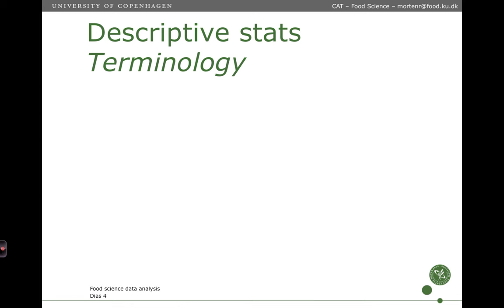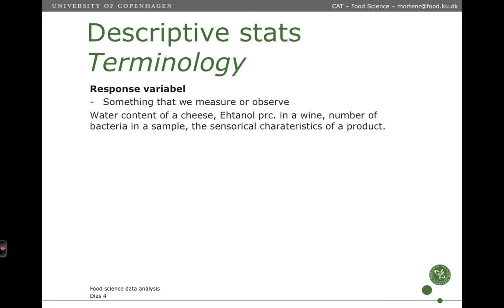So in terms of statistical terminology, a response variable is a variable that we measure or observe. So it is something that we can go out into the lab and figure out what is the value of some certain property of a food material for instance. So that could be water content of cheese, how much alcohol there is in the wine or the number of bacteria that we observe in a sample. Or it could also be a sensorical characteristic of a product, for instance how bitter is the coffee.